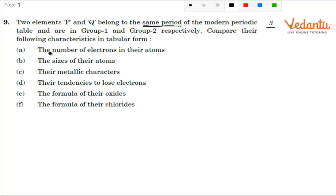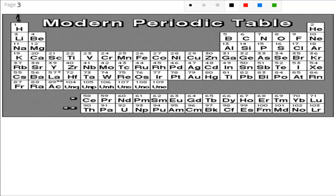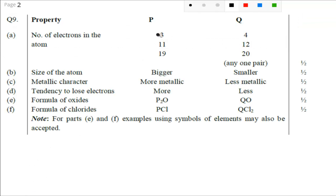Now we'll discuss it one by one. The first one is number of electrons in their atoms. You can pick any two elements but those two elements must be in the same period. If you see the periodic table, this is your Group 1 and this is your Group 2. Either you can pick lithium and beryllium, that is the number of electrons 3 and 4 respectively, or you can pick sodium or magnesium or potassium and calcium. We are going to pick sodium and magnesium. Take any one pair and you will be awarded half marks.